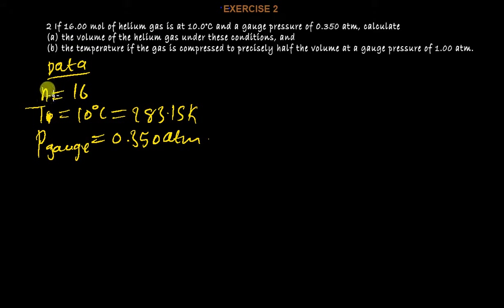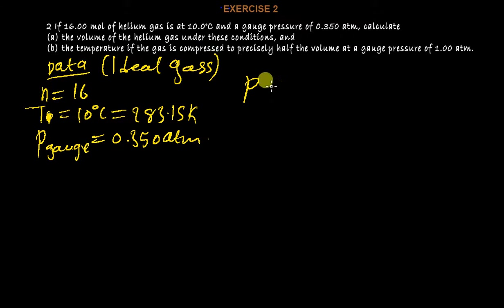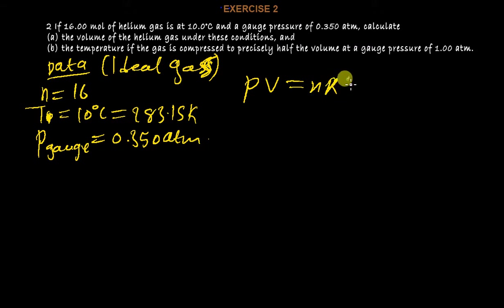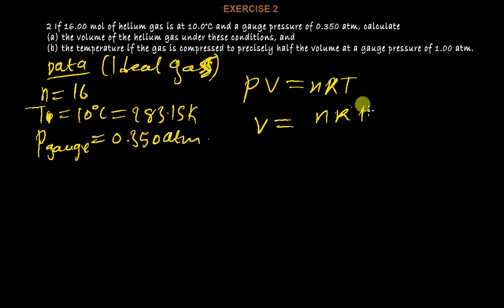We use the ideal gas law to find the volume, since we've been given n, T, and P. First, we make an assumption that we're dealing with an ideal gas. From there, PV equals nRT, and we make V the subject: V equals nRT over P.